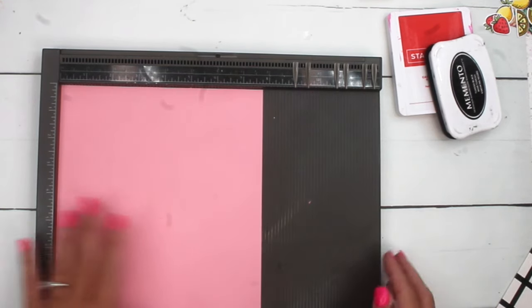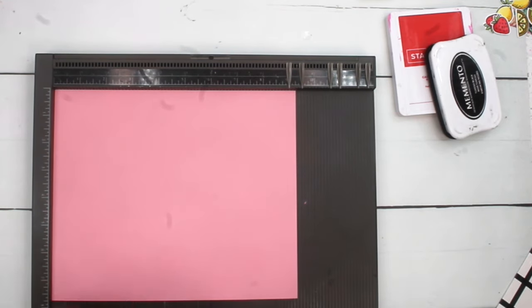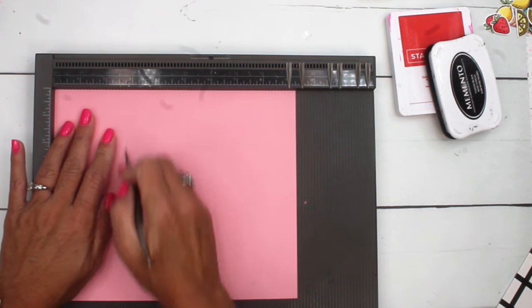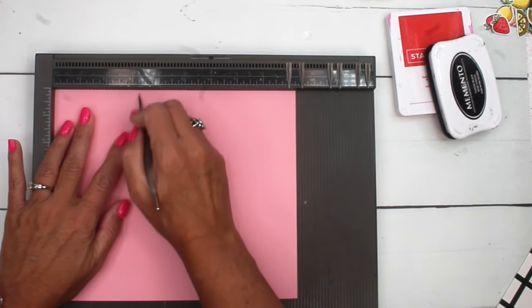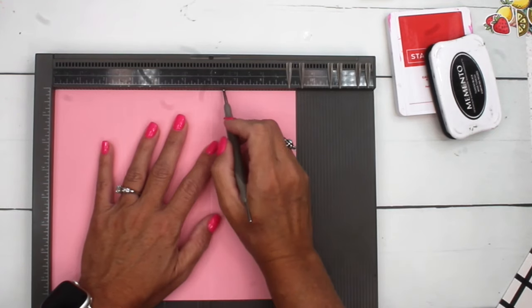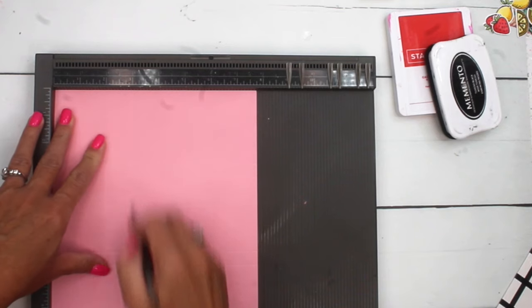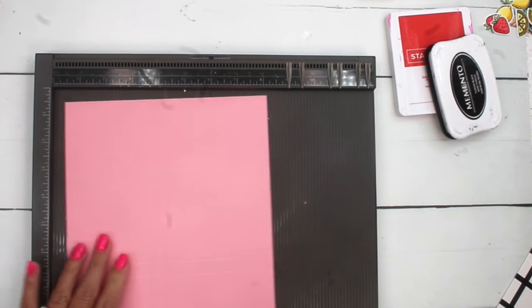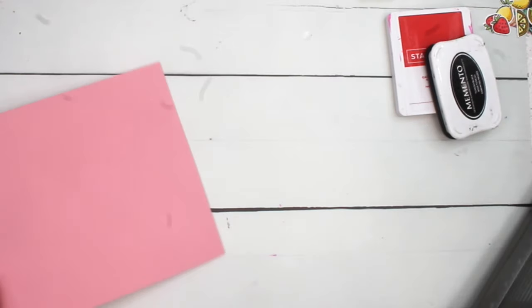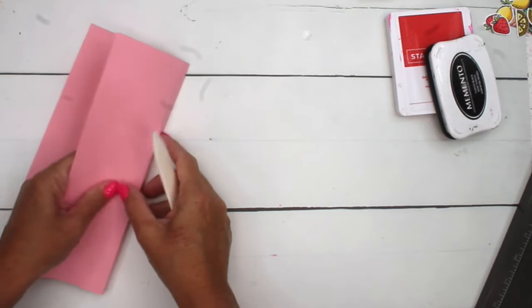You're going to need a piece of Pretty in Pink that is seven and three-fourths by nine and a fourth. On the long side, we're going to score it at two and three-fourths, three and a fourth, six and six and a half, and then turn it to the short side and score it at three and three and a half. Now grab your bone folder and you want to burnish all of these lines, make them nice and crisp.